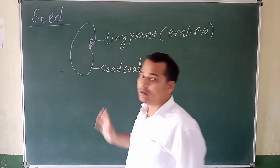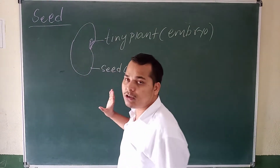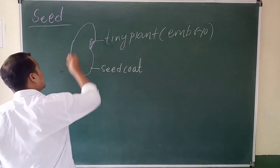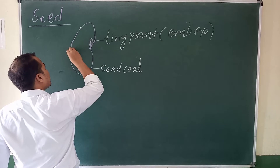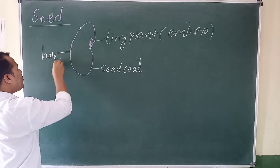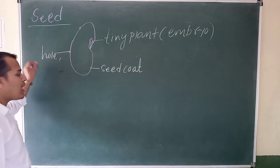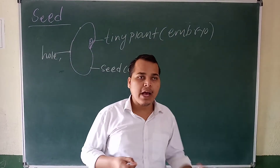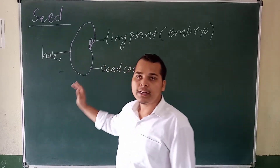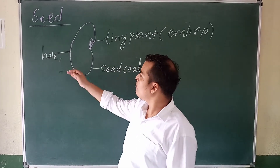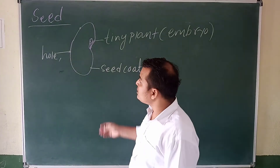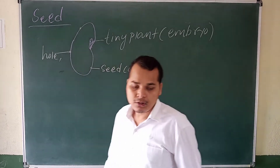So the outer covering of the seed is called the seed coat. And some seeds have a hole. What is the function of that hole? The function of the hole is to absorb water and minerals from the ground. So this is the structure of a seed — write it down.